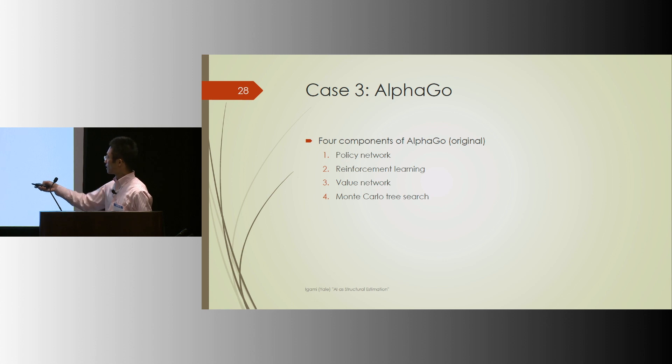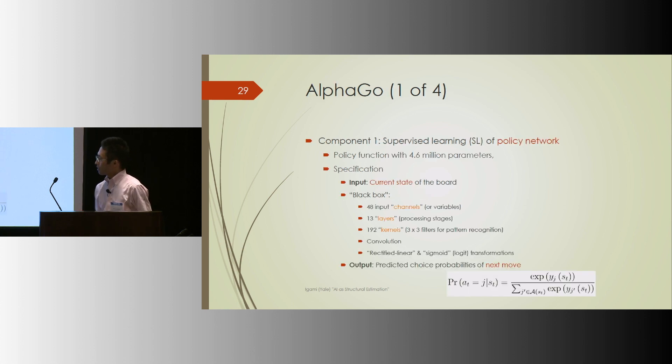And now AlphaGo had many components, four of them, and I'll talk about each of them. The first component is a policy network, which predicts professional players' moves, like actions A, as a function of current state ST. So it's a policy function with about 5 million parameters. The specification consists of 48 variables, 13 layers, 192 filters, 3 by 3, with lots of logit-like calculations in between. I don't go into the details, but the output is actually the predicted choice probabilities, literally the logit choice probability style.